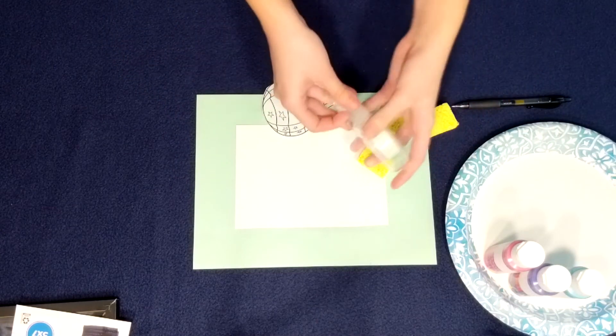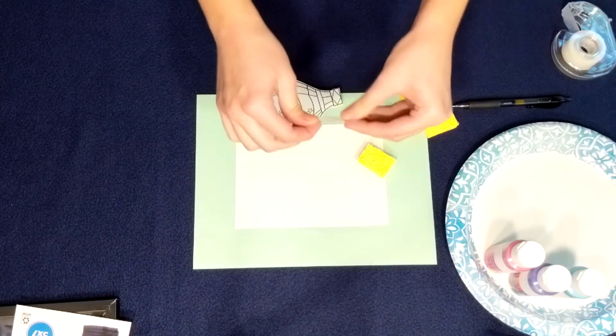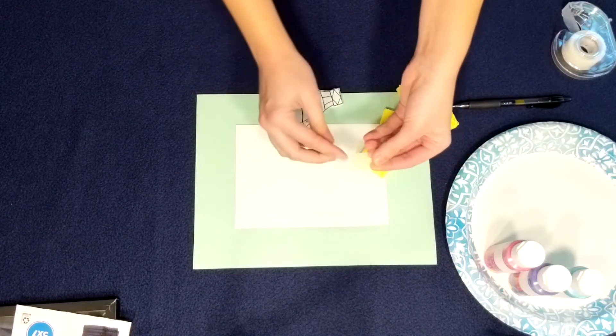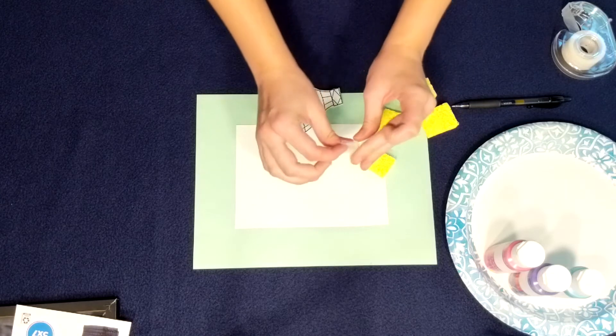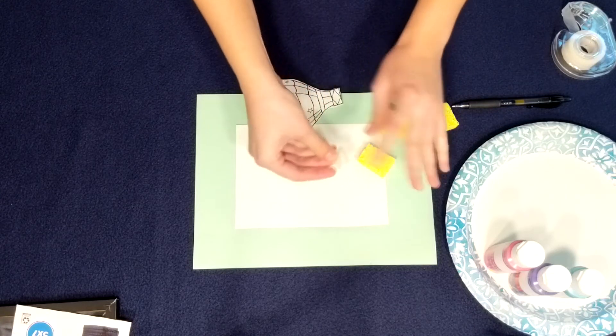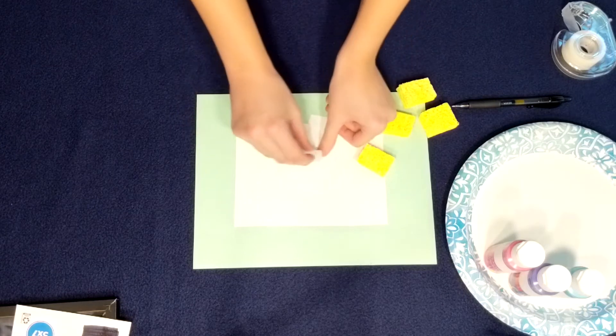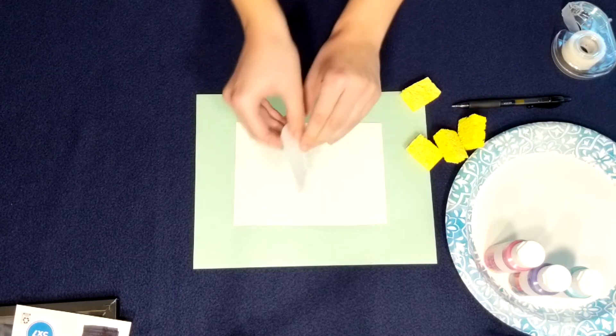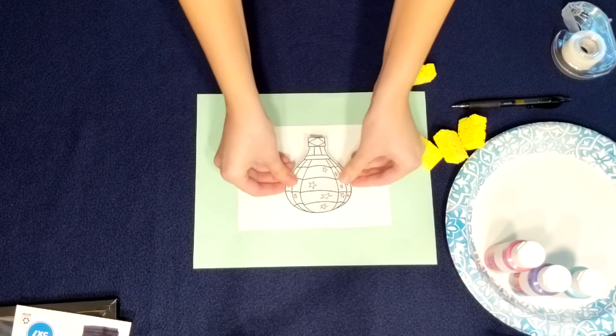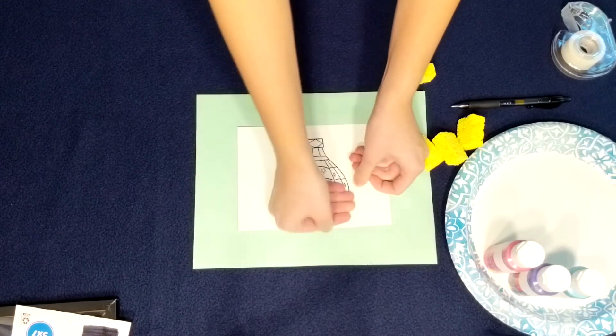Then take your tape and cut off a piece and make a tape bubble. If you don't know how to do that, take the ends of the tape, fold them to the middle, and close. It should be sticky on all sides. Put it on the back of your image and then stick it in the center of your paper and press down.